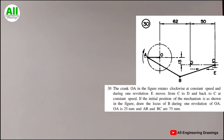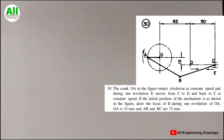The question says: the crank OA in the figure rotates clockwise at constant speed, and during one revolution, E moves from C to D and back to C at constant speed. If the initial position of the mechanism is as shown in the figure, draw the locus of B during one revolution of OA. OA is 25 mm and AB and BC are 75 mm.